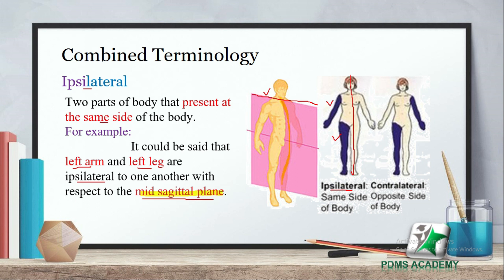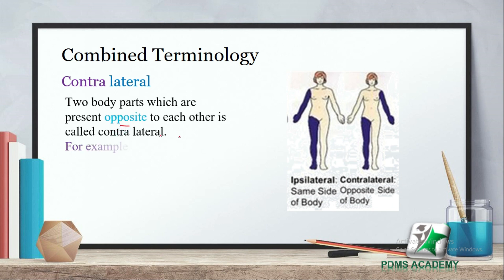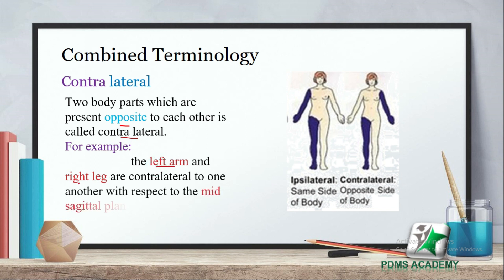Contralateral: the two body parts which are present opposite to each other with respect to the mid sagittal plane are called contralateral. For example، left arm and right leg are contralateral to one another۔ Ipsilateral کا opposite ہوتا ہے contralateral، یعنی opposite side of the body — left arm اور right leg دونوں contralateral ہیں۔